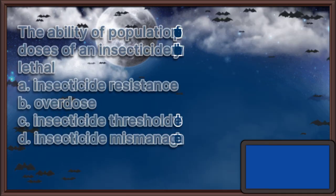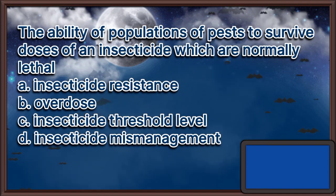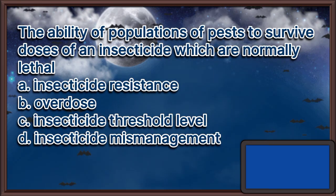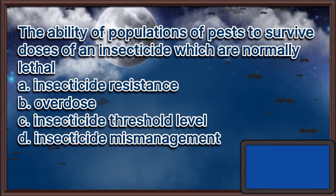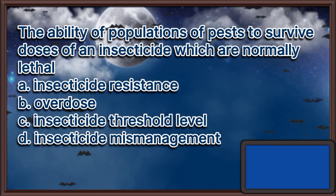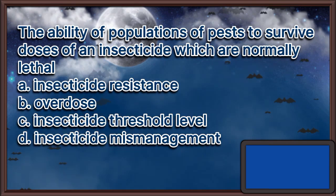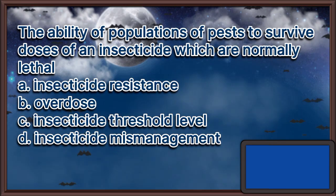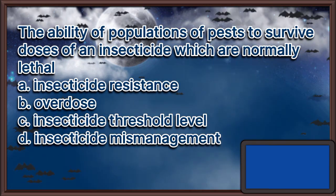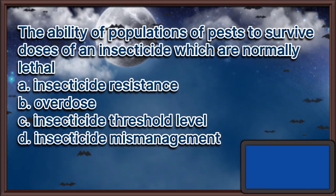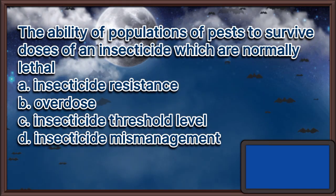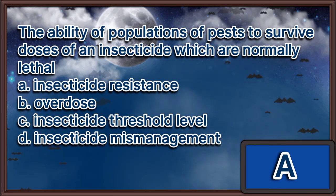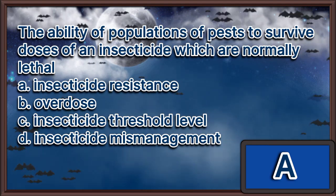The ability of populations of pests to survive doses of an insecticide which are normally lethal: A. Insecticide resistance, B. Overdose, C. Insecticide threshold level, D. Insecticide mismanagement. The answer is letter A.